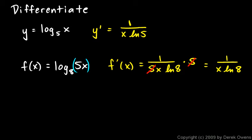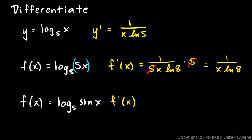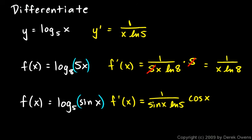Here's another example: f(x) equals log base 5 of sin(x). Find the derivative. f'(x) equals 1 over (sin x · ln 5), and then since sin x is our inner function, we multiply by its derivative, cos x, by the chain rule. We could simplify cos x over sin x into cotangent x, so the answer can be written as cotangent x over the natural log of 5. Either form is correct — both are equivalent.